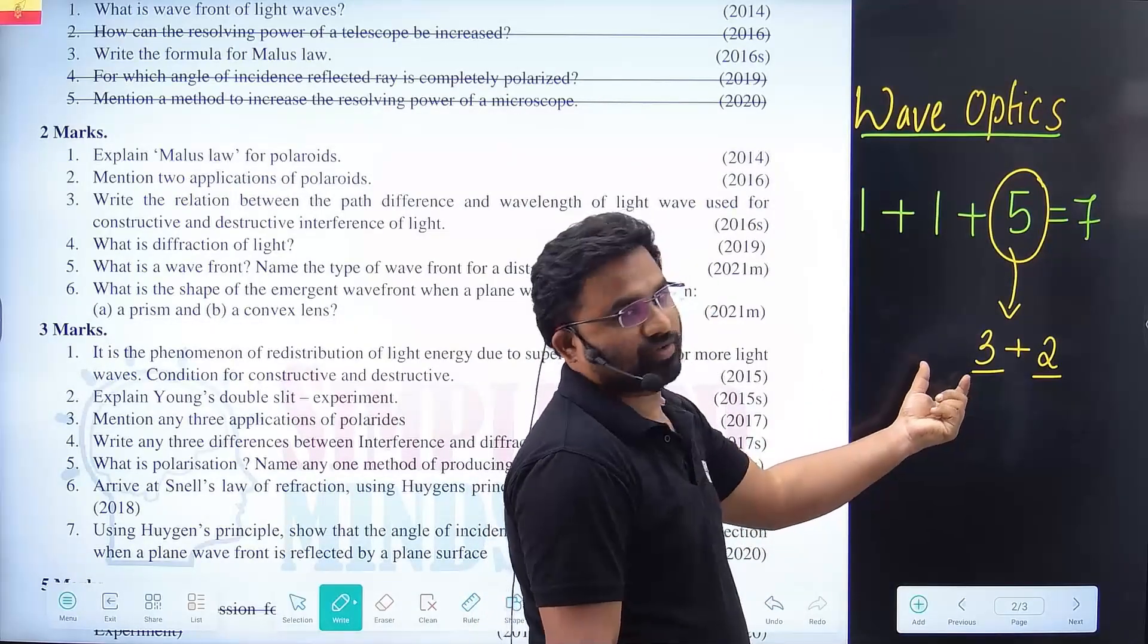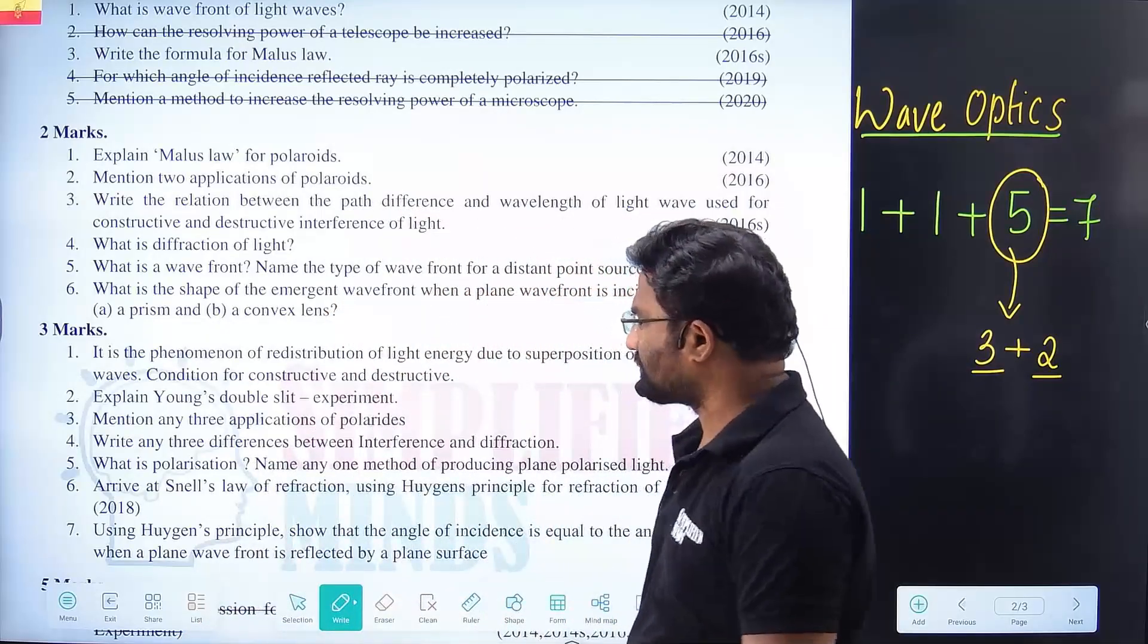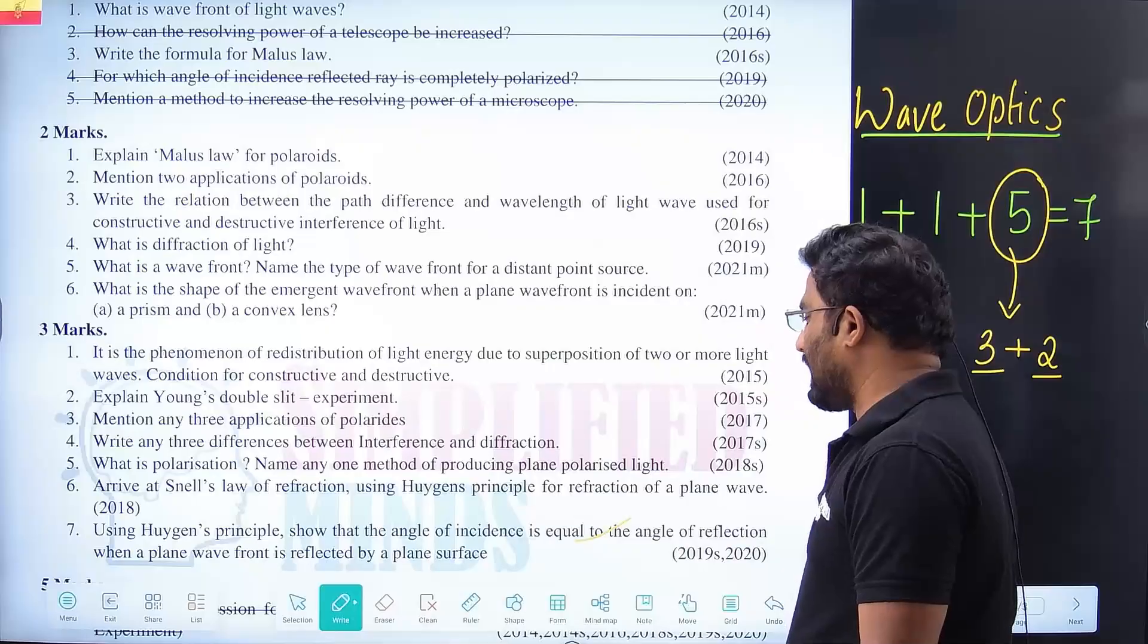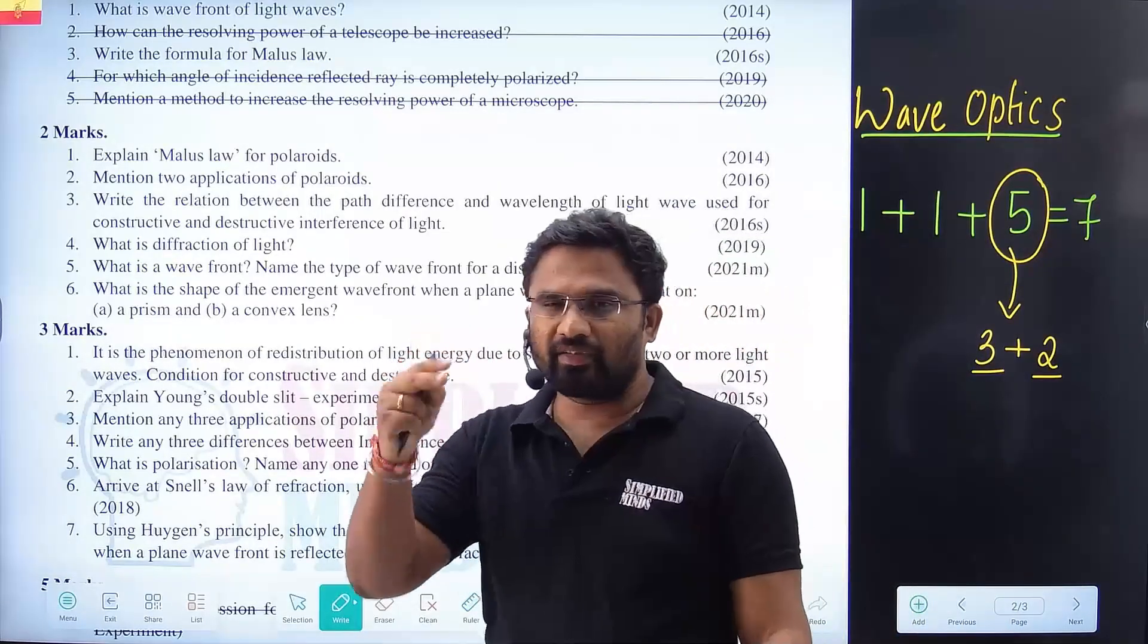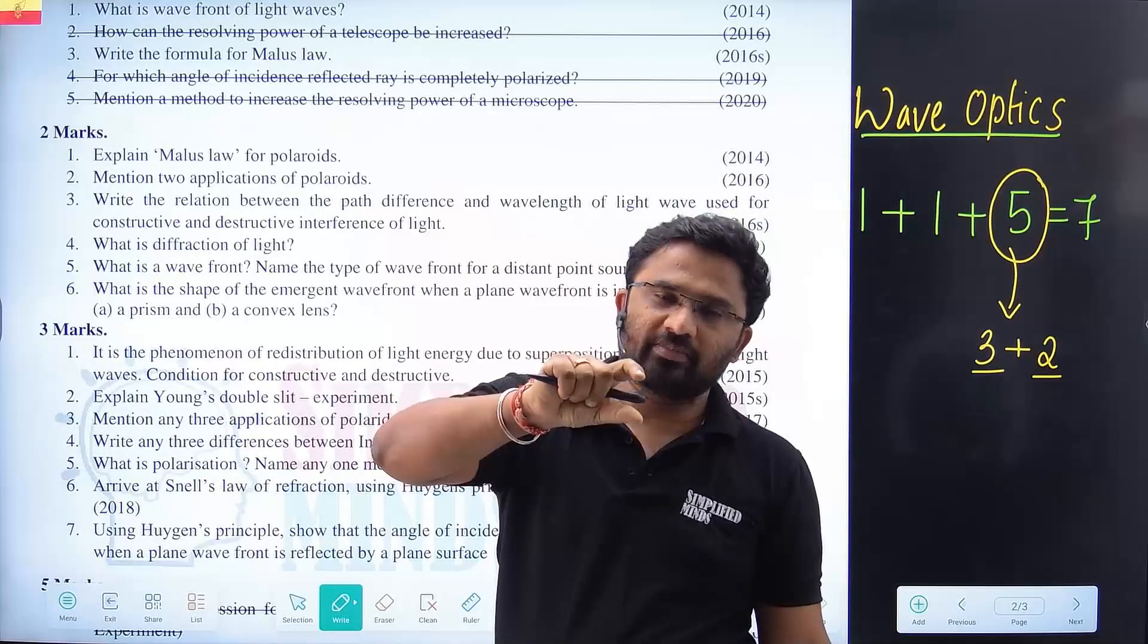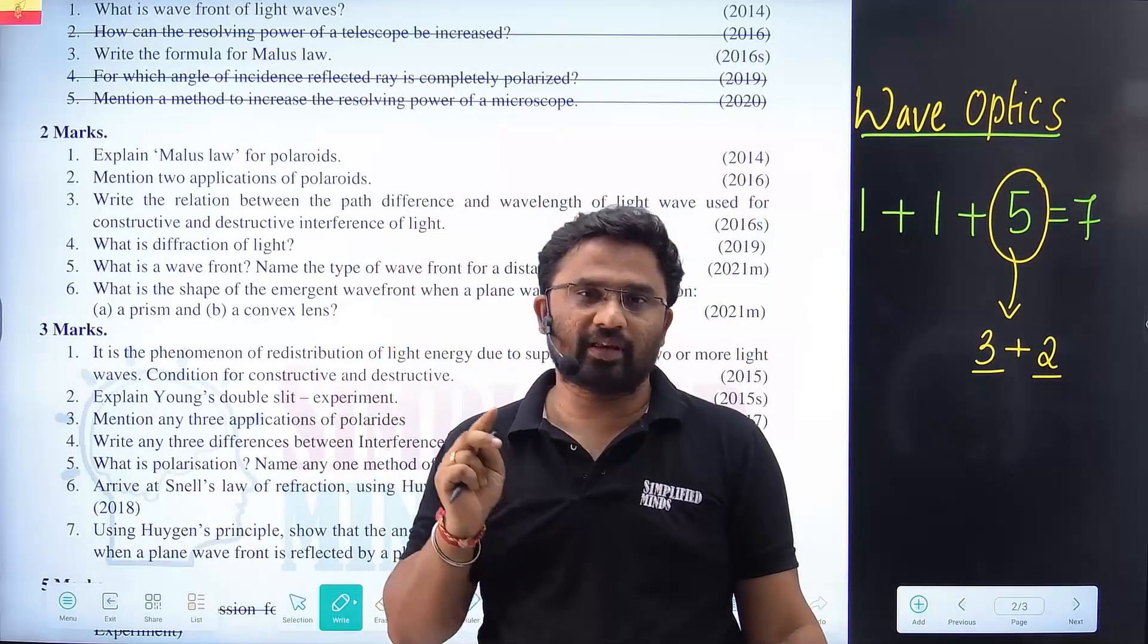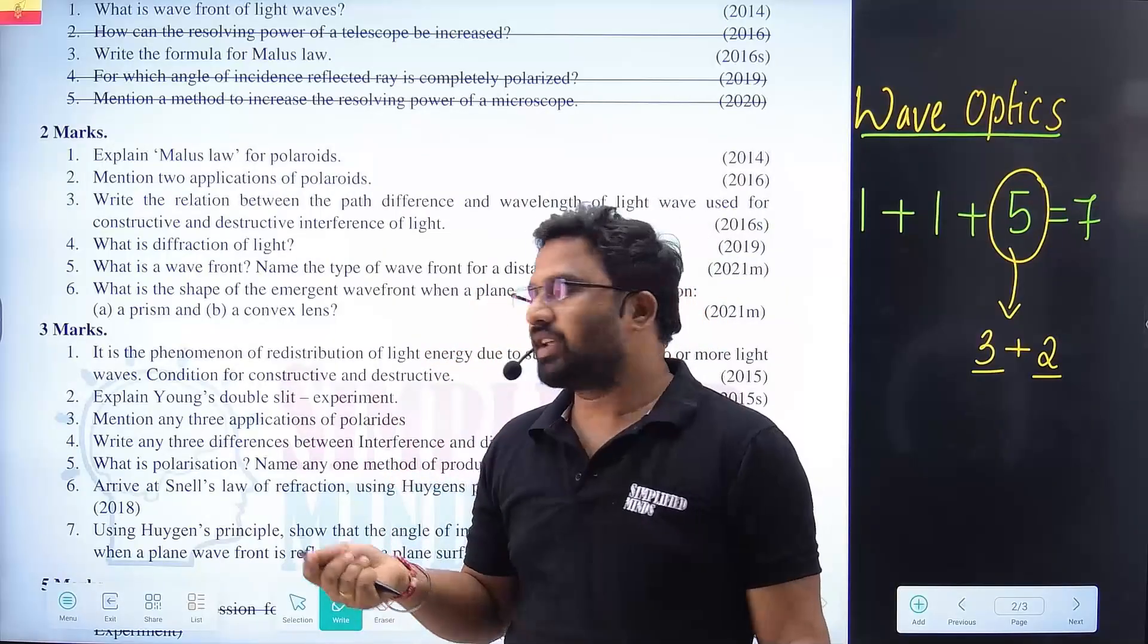5 marks, 3 plus 2 mostly. These type questions, especially Huygens principle - show that the angle of incidence is equal to angle of reflection. They can frame Huygens principle along with other derivation on the basis of reflection or refraction. It is a good question for 3 marks.